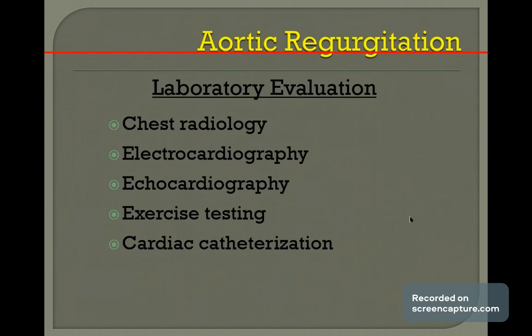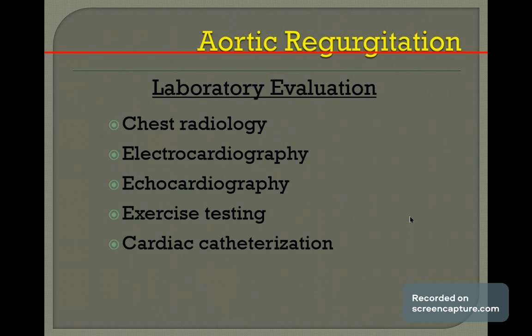The differential diagnosis includes mitral stenosis, because of the diastolic murmur. The differential diagnosis of diastolic murmur includes pulmonary regurgitation (functional Graham Steell murmur), patent ductus arteriosus, also causing a murmur.